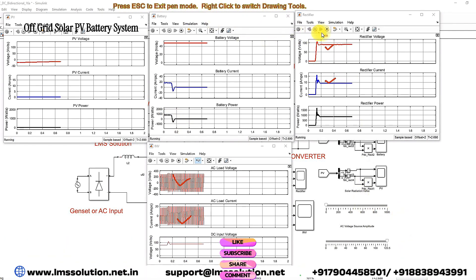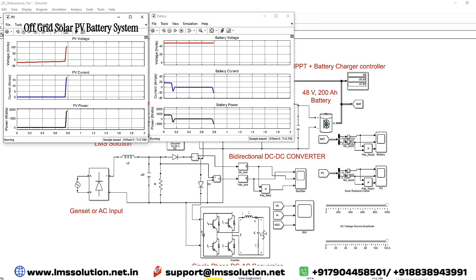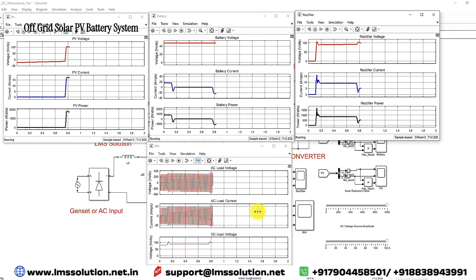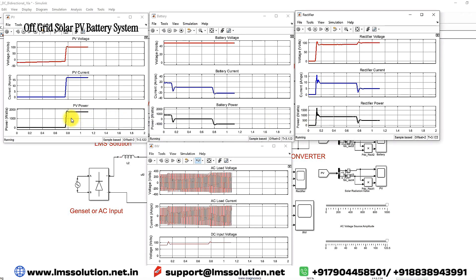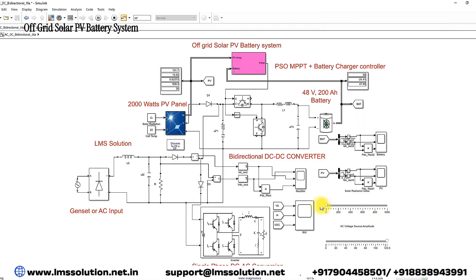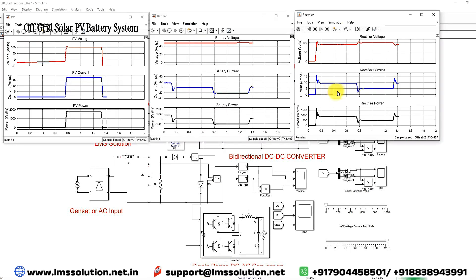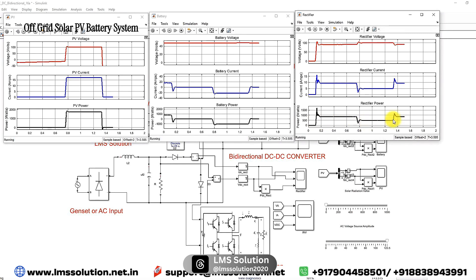Now I am going to increase the irradiation. Because of increasing irradiation, the PV power increases. The excess power will charge the battery as well as supply the AC load. The power sharing of the generator set decreases to around 500 watts because the PV is generating some power. If the PV power is decreased again, the battery goes to idle condition and we get power from the generator set to supply the AC load.